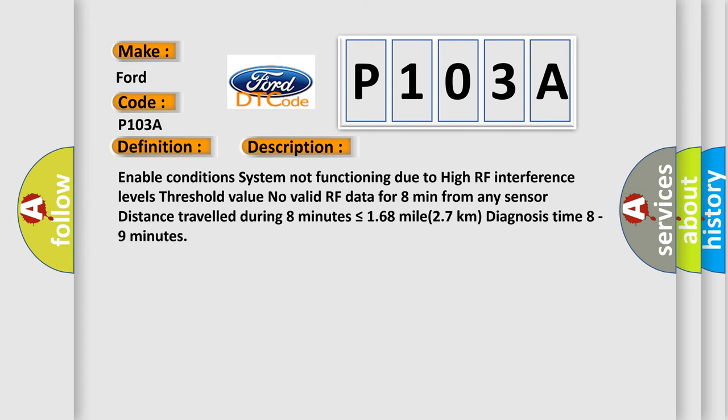Enable condition: system not functioning due to high RF interference levels. Threshold value: no valid RF data for 8 minutes from any sensor. Distance traveled during 8 minutes is less than or equal to 168 miles, 27 kilometers. Diagnosis time: 8 to 9 minutes.